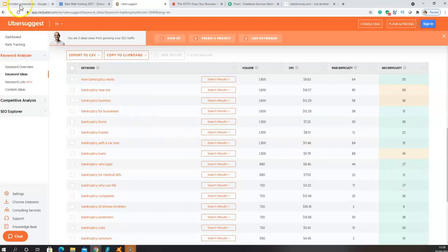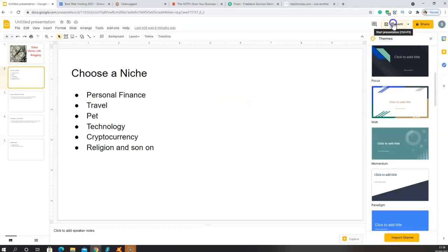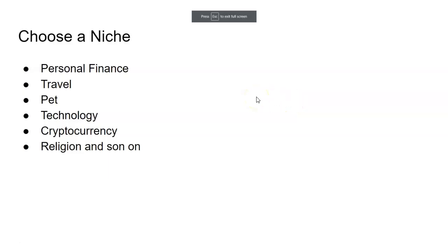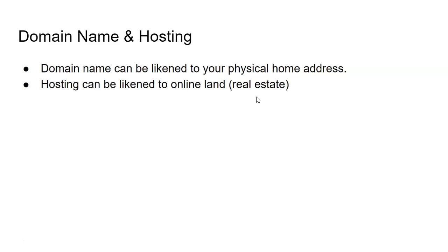After doing your keyword research and choosing your niche — I gave the example of personal finance, but the same goes for traveling, technology, tech reviews of software, hardware, phones and gadgets, or cryptocurrencies — use that tool and any other free keyword research tool you can find, then choose a niche. Once you've chosen your niche, the next step is domain name and hosting.